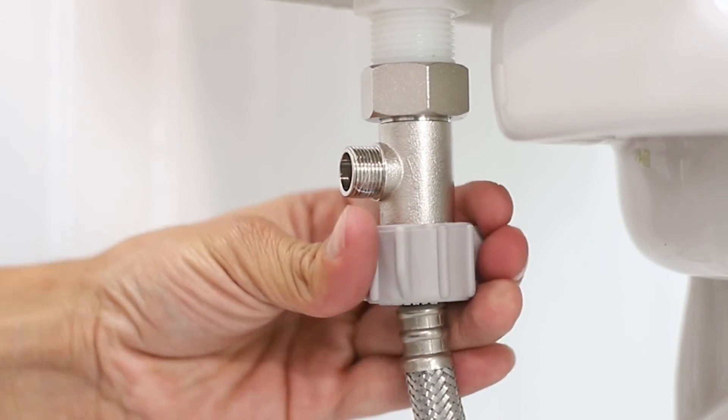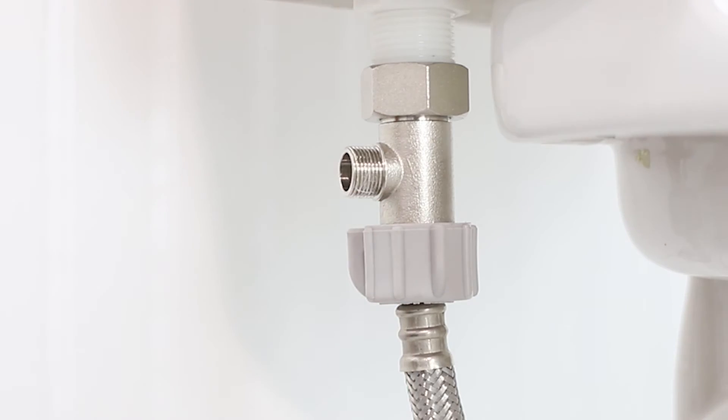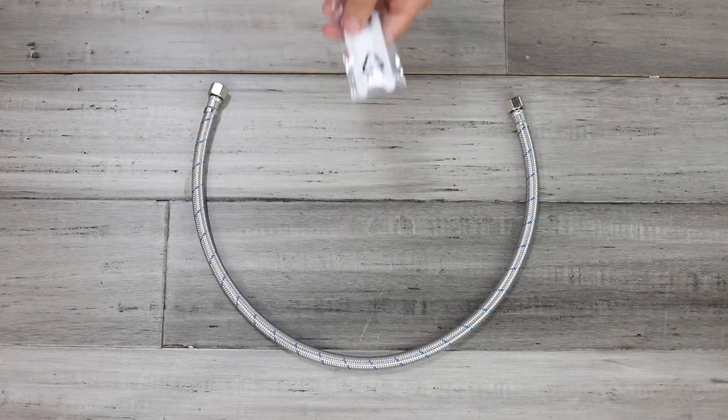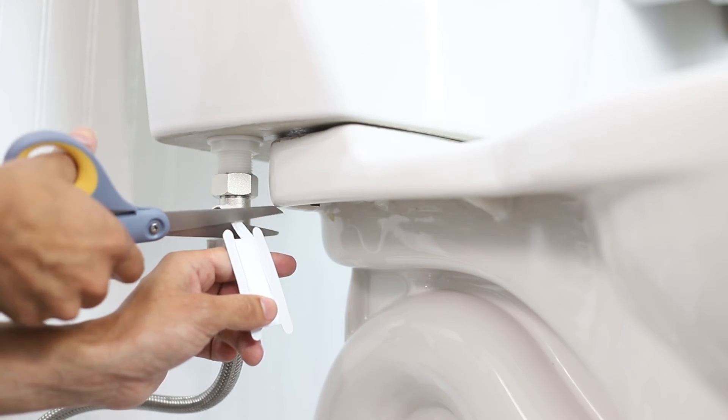Reconnect the flexible supply line to the bottom of the T-valve. It is recommended to apply plumber's tape.